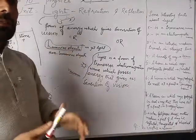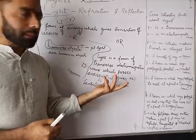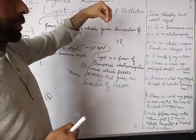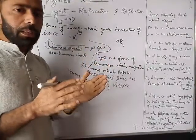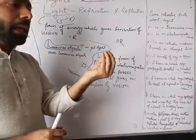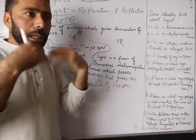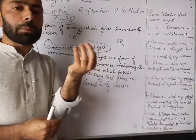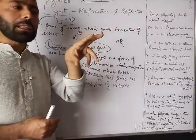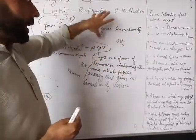Regarding the nature of light, it was for hundreds of years a very typical question for scientists — what is the nature of light? And different scientists gave different views. When light travels through different mediums, it behaves like a wave. So on that basis, right now it is said that light has a dual nature.